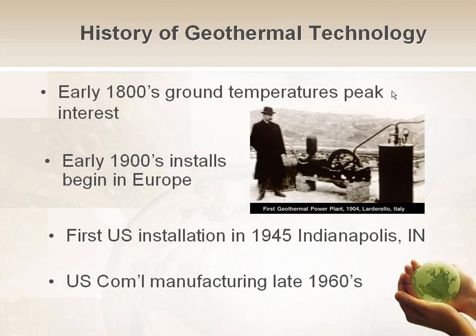The history of geothermal actually started back in the 1800s when people noticed that below the frost line, the ground temperature stays the same year-round. The first geothermal system ever installed used hot water from a hot spring piped into a house — medium-grade geothermal energy. In the early 1900s, Europe jumped on hydronic systems using groundwater to heat and cool spaces. The first U.S. installation was in the mid-1900s, with installations in Ohio and Indianapolis. Commercial manufacturers started mass-producing geothermal equipment 20 to 30 years later. The technology has been around for a very long time, and Europe has been utilizing it extensively.